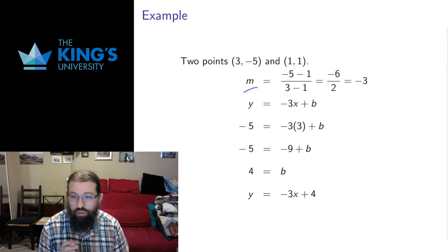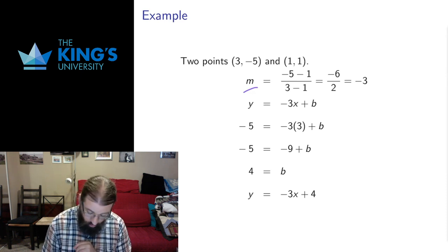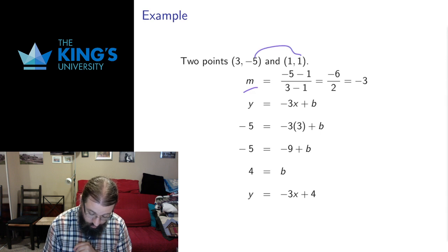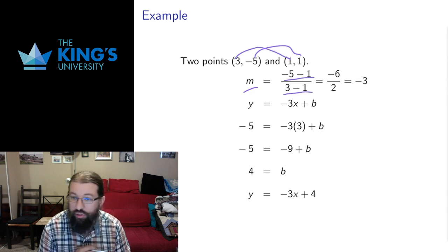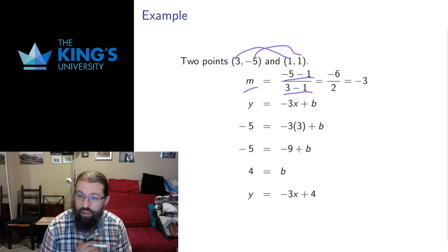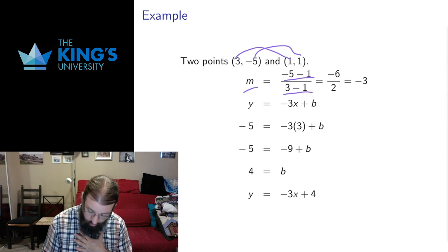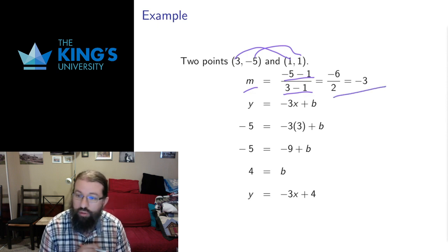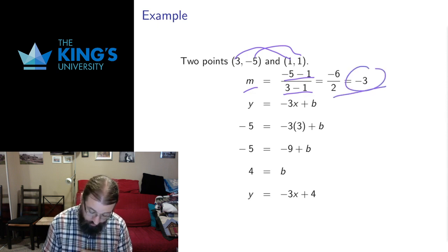As long as the x coordinates are not the same, we don't divide by zero. We can take y minus y for the numerator, take x minus x for the denominator, and that's going to give us the slope. We calculate this: negative 5 minus 1 is negative 6, 3 minus 1 is 2, negative 6 divided by 2 is negative 3, so that gives us the slope.